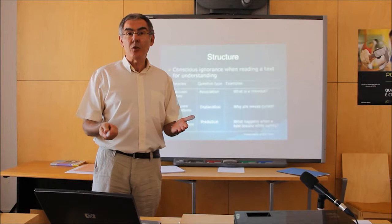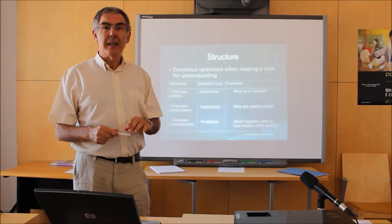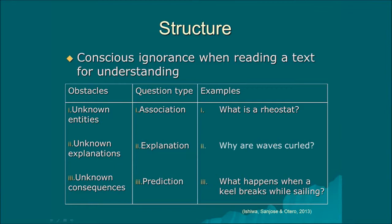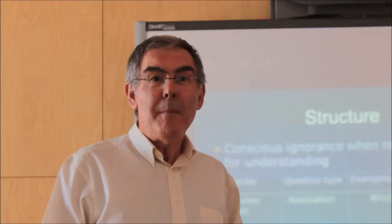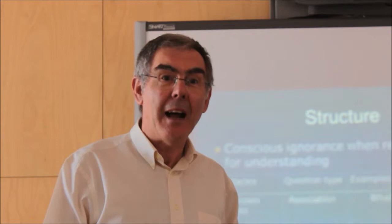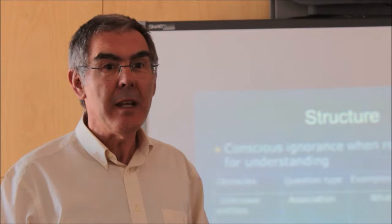The third main type of unknowns that could be identified through students' questions were unknowns related to consequences. Students also wanted to know what were the consequences of the processes mentioned in the text, and they asked questions such as 'what happens when a keel breaks while sailing — what is the consequence of this event?' Therefore, these three were three basic components of the unknown that students are aware of when they read a short paragraph for understanding.